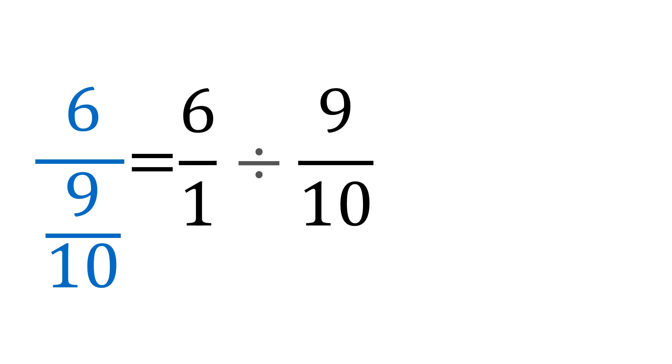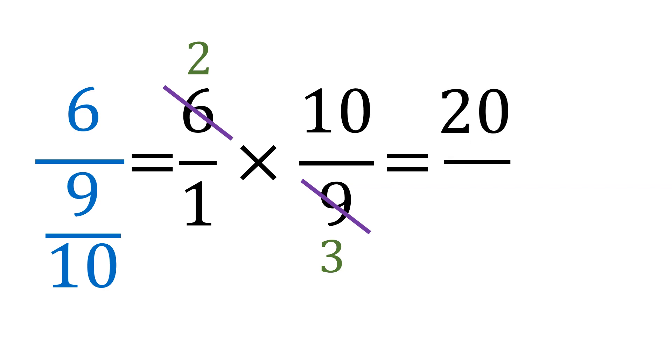We keep, change, invert. Then, do cross cancellation. 6 and 9 are both divisible by 3. 6 divided by 3 is 2, 9 divided by 3 is 3. This is equal to 2 times 10 is 20, 1 times 3 is 3, or 6 and 2 thirds.